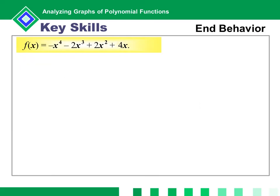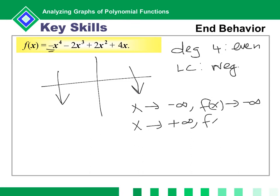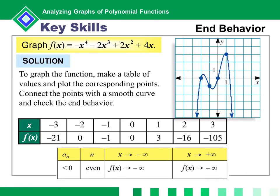For this next polynomial, the degree is 4, which is even, and the leading coefficient is negative. Since it is even, I know it's going to be pointed down at both ends. The end behavior is: as x approaches negative infinity, f of x approaches negative infinity; and as x approaches positive infinity, f of x approaches negative infinity. When you graph it, that's how it looks.